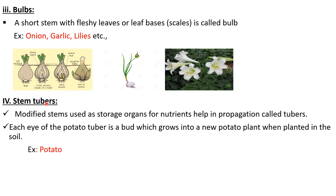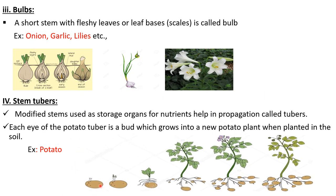The fourth one is stem tubers — modified stems used as storage organs for nutrients that help in propagation. The best example is potato. The potato has many eyes on its surface, and each eye of the potato tuber is a bud which grows into a new potato plant when planted in the soil. The eyes on the potatoes are called buds. When you take a small piece of the potato with an eye and plant it in the soil, after a few days it becomes a new potato plant with germination of shoot, plant, complete plant flowering, and formation of many new potatoes.